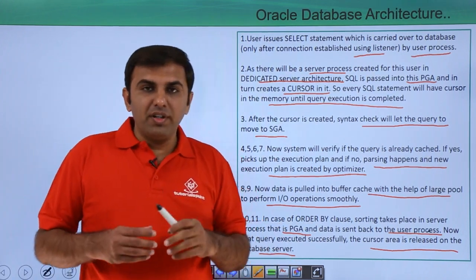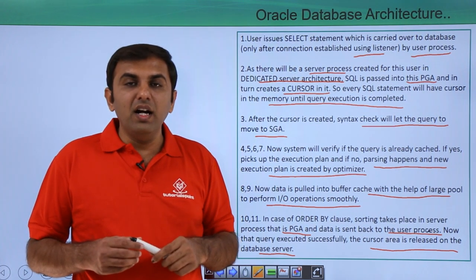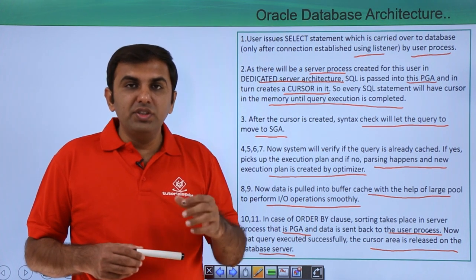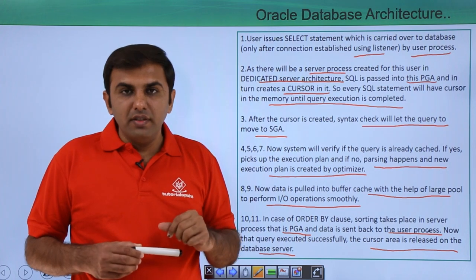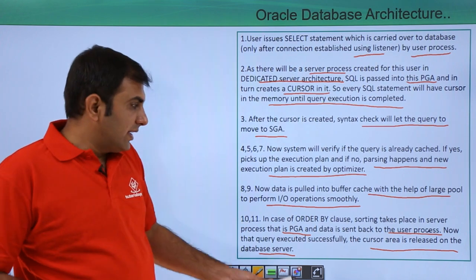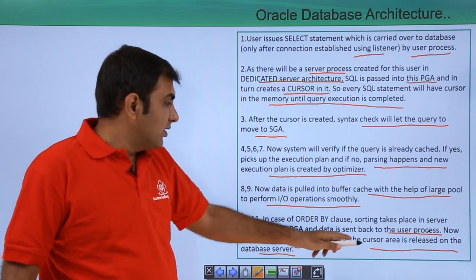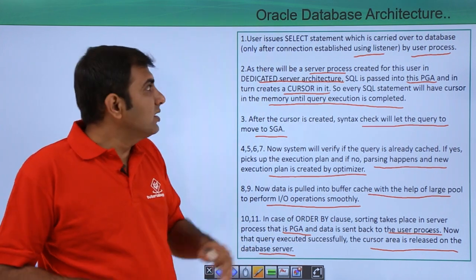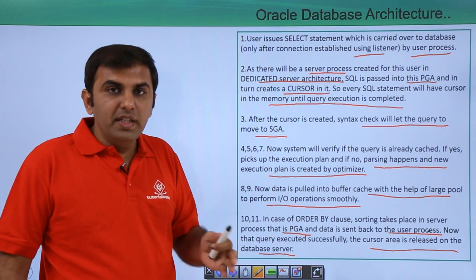If you are issuing an ORDER BY clause, the ordering of the data is done under the PGA — there is a sort area under the PGA where sorting is done — and once the sorting is done it displays your data. At the end, whatever cursor was opened and created is released. So this is the complete process that happens whenever you are selecting data from the database.